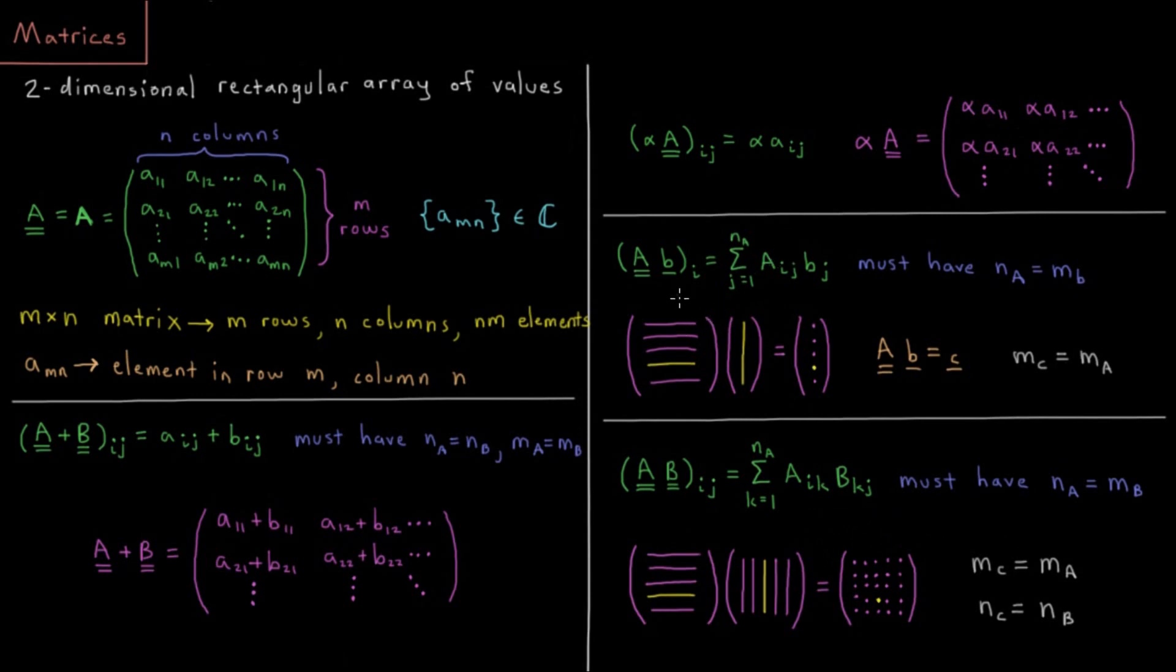We can also multiply matrices times column vectors. If I want to multiply a matrix times a column vector, for example matrix A times vector B, notice two underlines for the two-dimensional matrix, one underline for the one-dimensional vector.